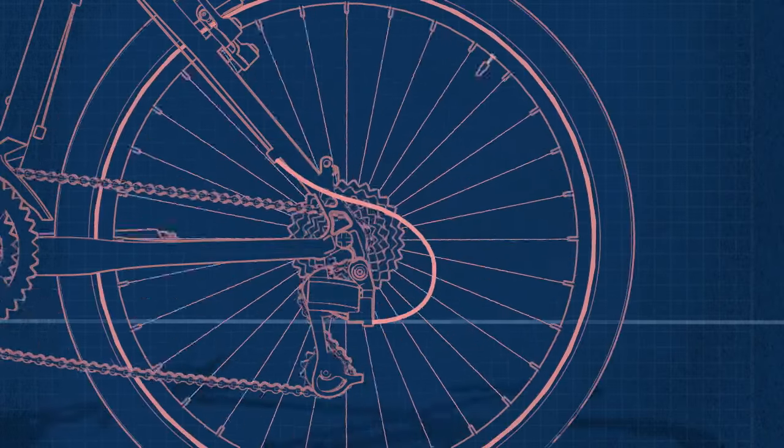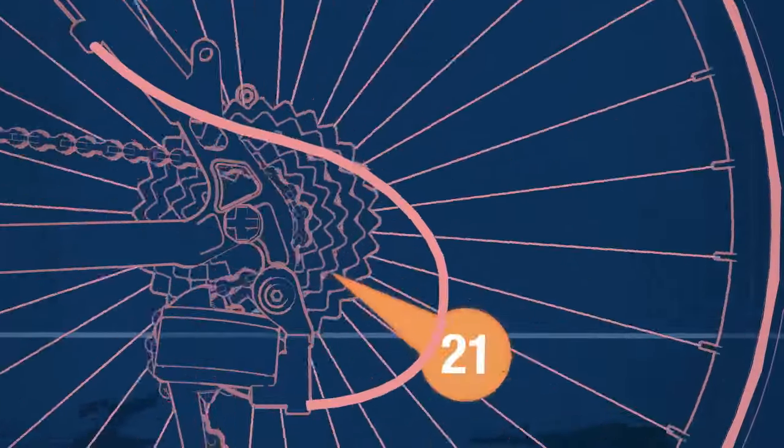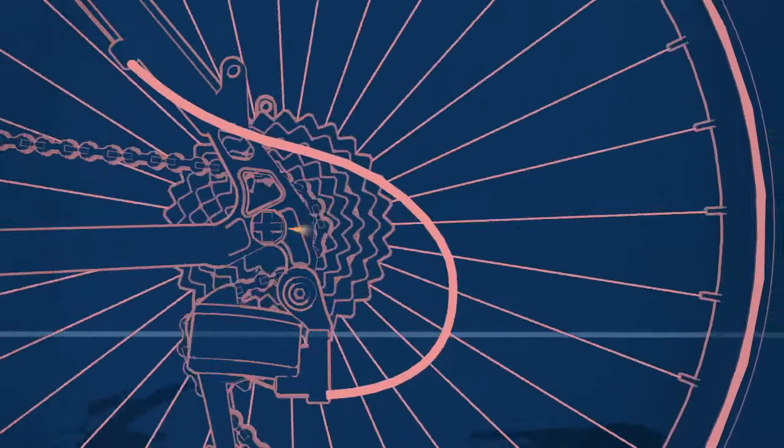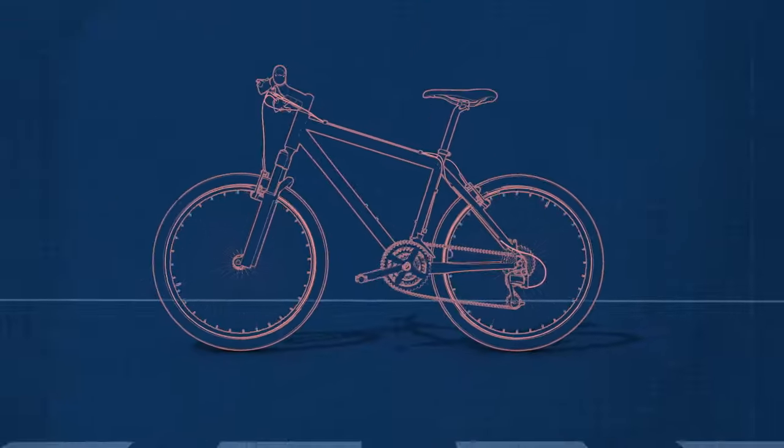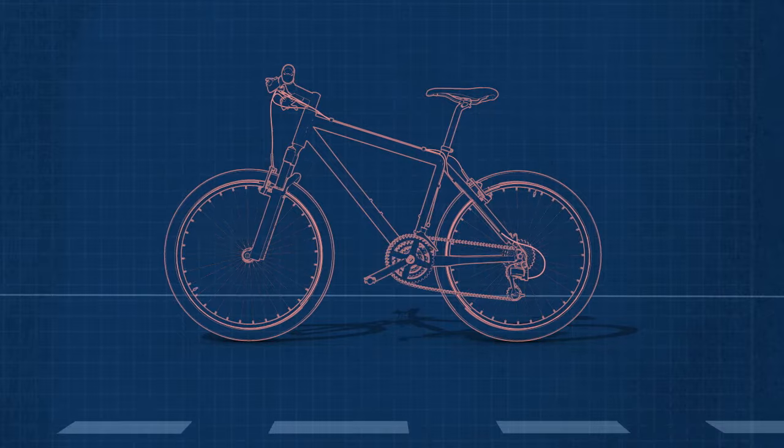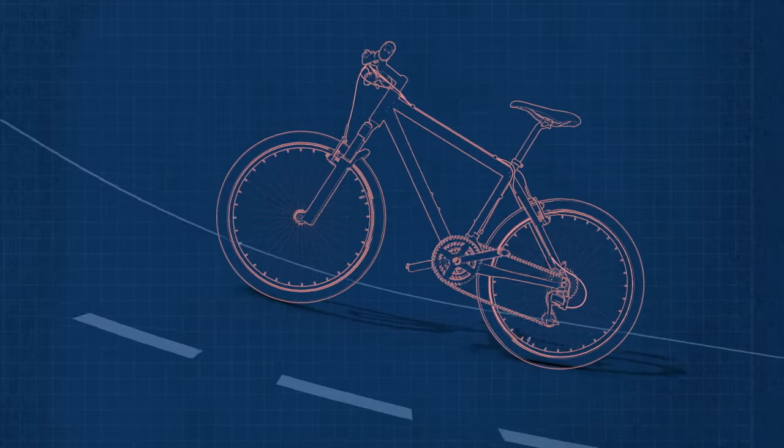We're sure you've seen how sophisticated bicycles have gotten, with 21, 24, 27 gears and more. Why are bicycles set up this way, and why are they so popular? Because there's a gear for every situation, from the flattest straight to the toughest incline, and everything in between.